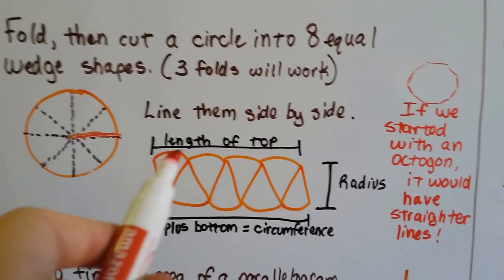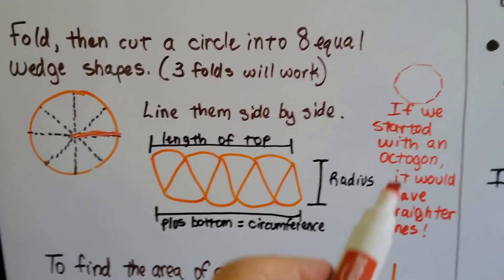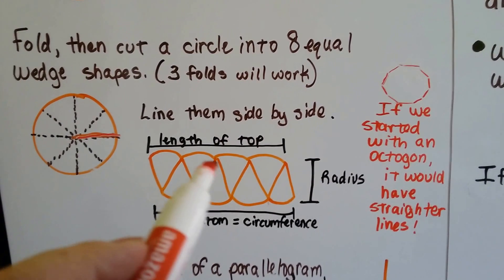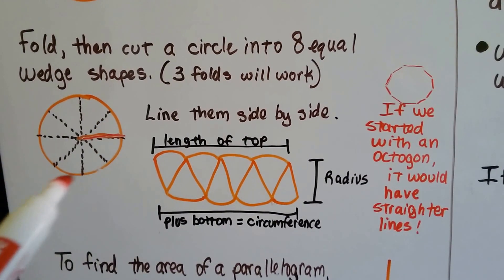These little arcs on the sides here make it hard to see. If we had used an octagon, it would have straighter lines, wouldn't it? Because each of these would be flat coming around, it wouldn't be arced.